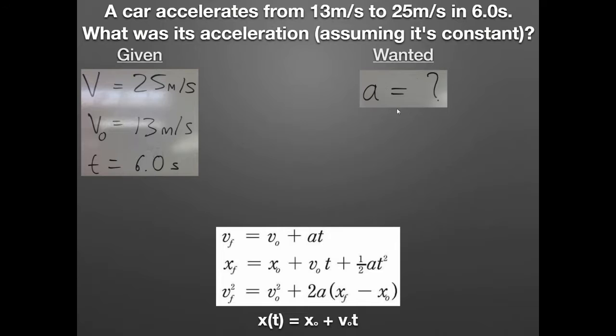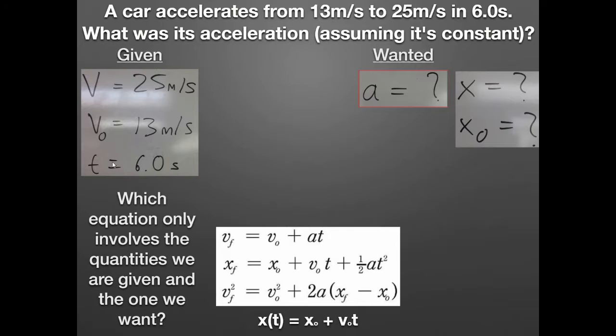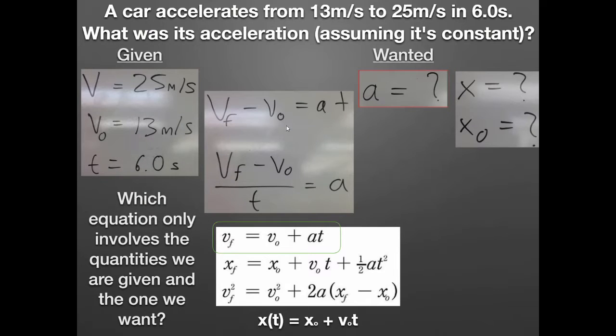What are we wanted? We're wanted to provide the acceleration value. I'm going to also make note of the quantities that we don't know, which would be the initial position and the final position, X0 and X. We were not given any of that information. Now the roadmap: which equation involves these three known quantities V, V0, T, and the unknown quantity we desire, A? Well, the first one. So we will plug in now, after we solve for A, these three known quantities.